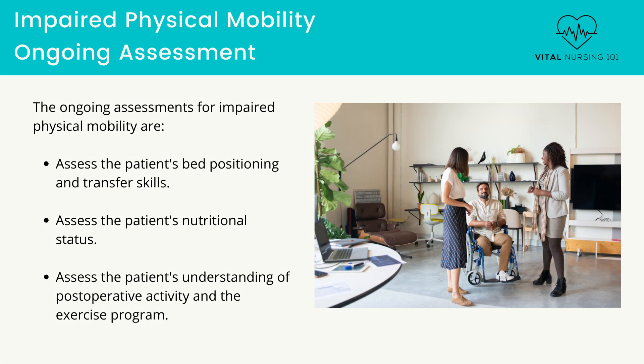Ongoing assessments: Assess the patient's bed positioning and transfer skills. Learning transfer techniques helps re-establish the patient's independence and promotes a feeling of security when moving in bed and ambulating. A patient who had normal mobility before the amputation may find crutch walking or walking with a prosthesis more tiring and may require exercises that strengthen appropriate muscle groups to support ambulation.